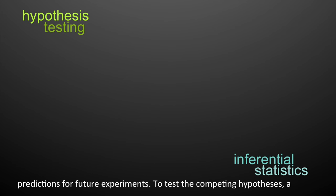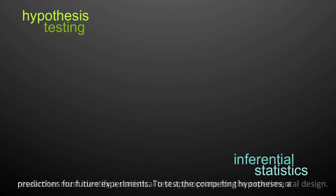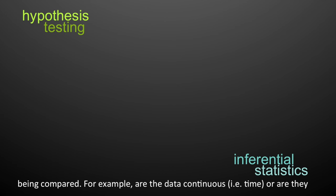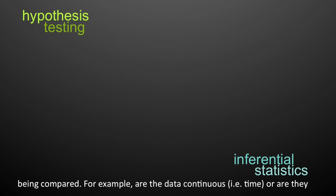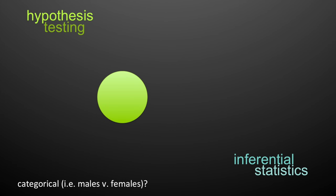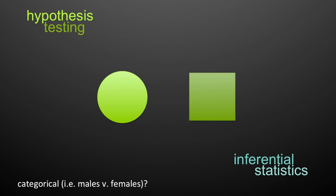To test the competing hypotheses, a researcher must identify a statistical test appropriate for the experimental design. There are many different statistical tests, which differ in their assumptions about the data being compared — for example, are the data continuous like time, or are they categorical like males versus females?